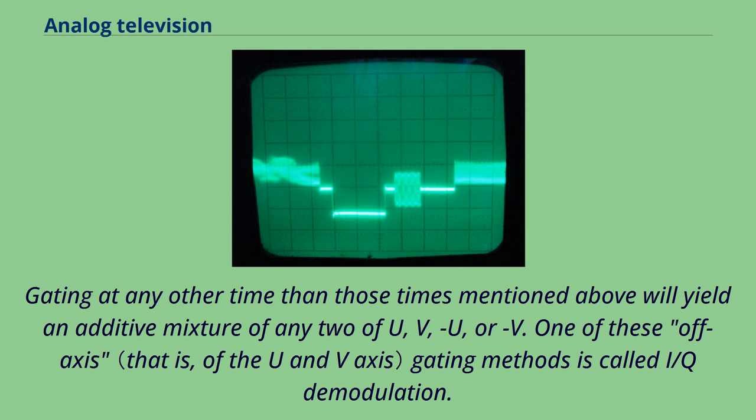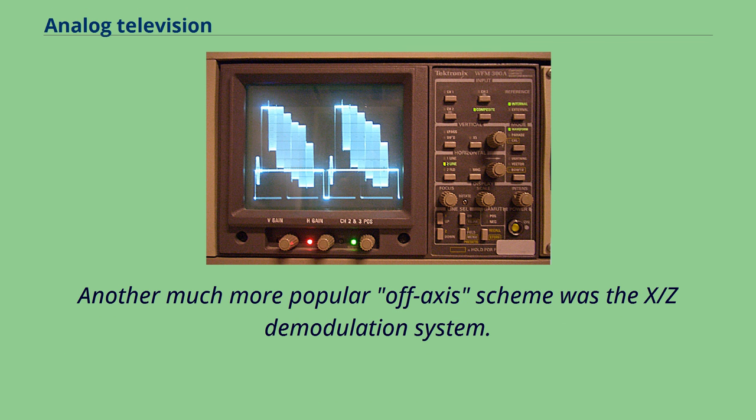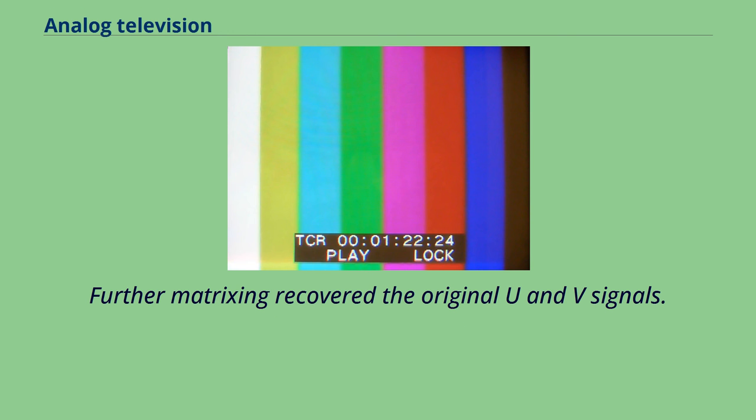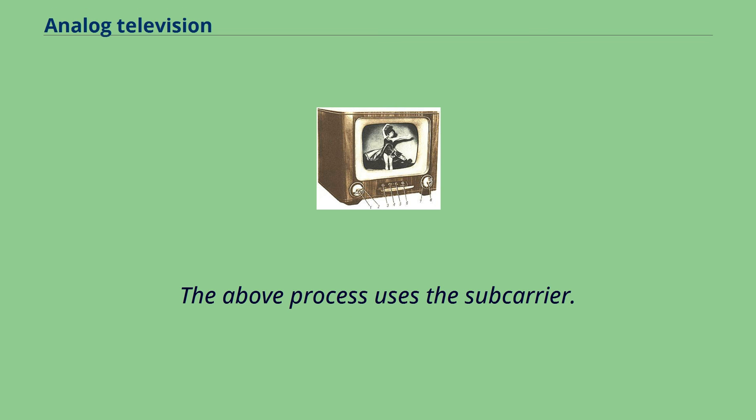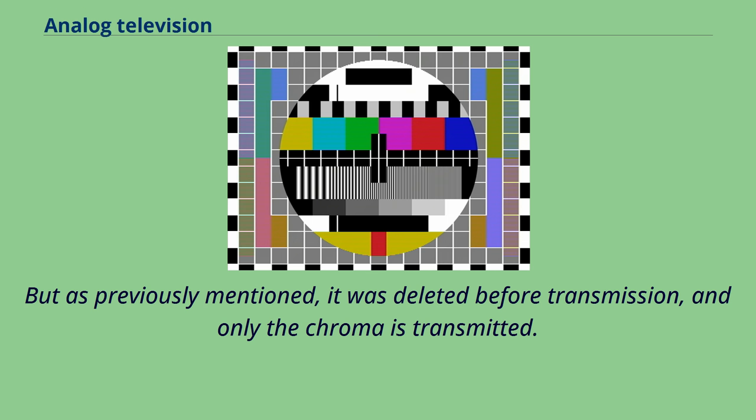The above process uses the subcarrier. But as previously mentioned, it was deleted before transmission, and only the chroma is transmitted. Therefore, the receiver must reconstitute the subcarrier. For this purpose, a short burst of the subcarrier, known as the color burst, is transmitted during the back porch of each scan line. A subcarrier oscillator in the receiver locks onto the signal to achieve a phase reference, resulting in the oscillator producing the reconstituted subcarrier.